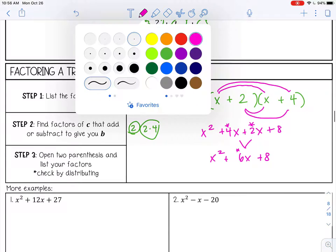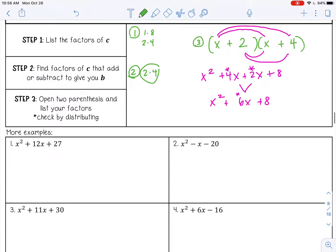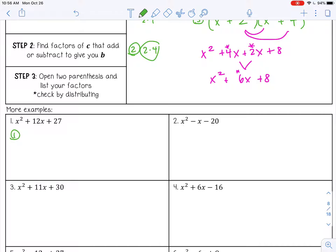So let's continue on. So the first example, we want to start by listing the factors of 27. So 1 times 27, 3 times 9, looks like that's it. And then step 2, which pair is going to add or subtract to give me positive 12? 1 plus 27 is 28. That's not going to work. 3 plus 9, that is 12, so 3 and 9.